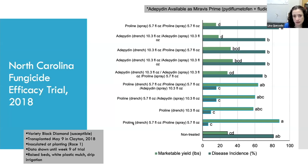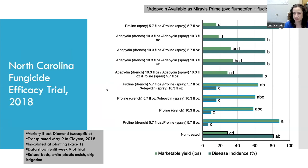If you have fusarium, you really want to get that Proline ground application at the transplant stage. Adepidyn does have some efficacy — not as strong — but because the label allows more ground applications it could be a good partner as a follow-up application. Miravis Prime is a good partner to Proline, but Proline is very important if you have a heavily infested field.